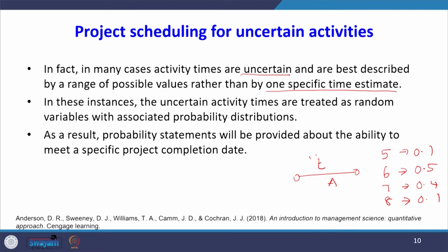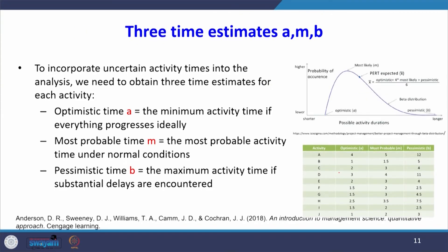Now we discuss the three time estimates for an activity — A, M, B. To incorporate uncertain activity times, we need three time estimates for each activity. The first is optimistic time A: the minimum activity time if everything progresses ideally, with no interruption. The second is most probable time M: the most probable activity time under normal conditions.